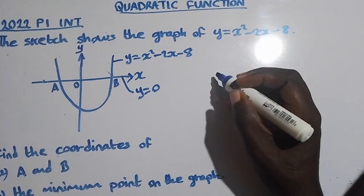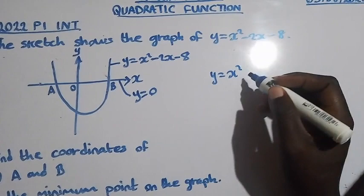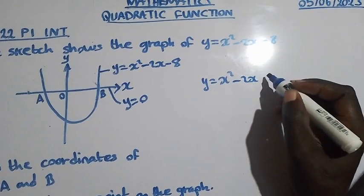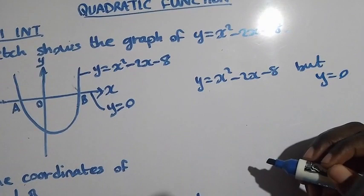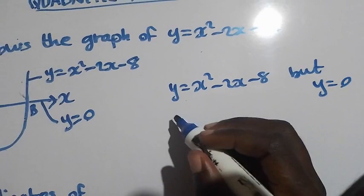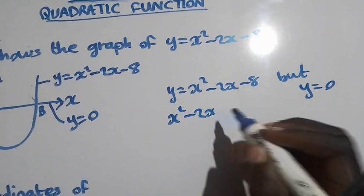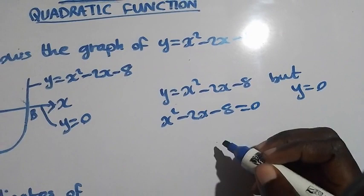So now this equation will be y equal to x squared minus 2x minus 8. But y equal to 0, so where there is y, we are going to replace it with 0, which gives us x squared minus 2x minus 8 equal to 0.